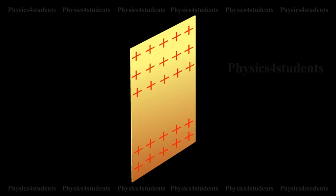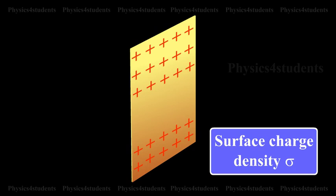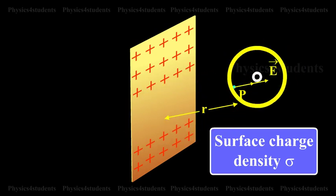Consider an infinite plane sheet of charge with surface charge density sigma. Let P be a point at a distance r from the sheet, and E be the electric field at P.